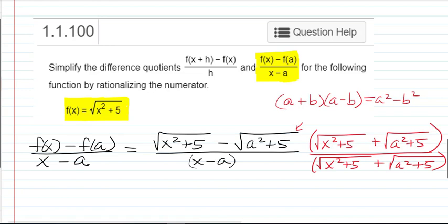Now when we multiply the numerators together, a is going to be our x squared plus 5 square root and b is going to be the square root of a squared plus 5. So we're going to be squaring those square roots. Square root of x squared plus 5 squared minus the square root of a squared plus 5 squared.